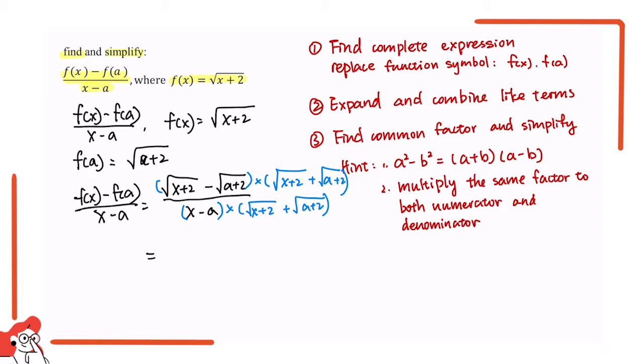So we have the difference of squared. So we have square root of x plus 2 squared minus square root of a plus 2 squared over x minus a times square root of x plus 2 plus square root of a plus 2.